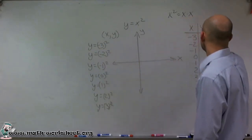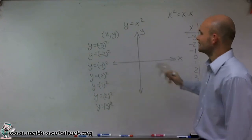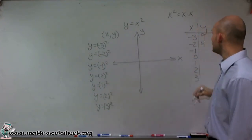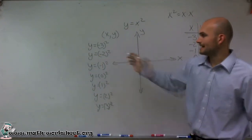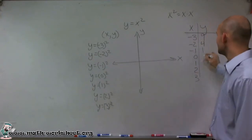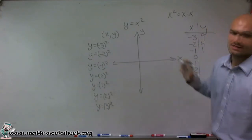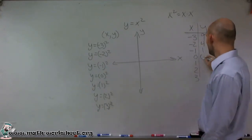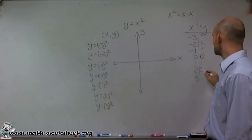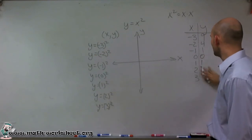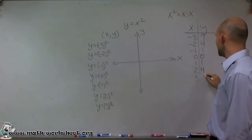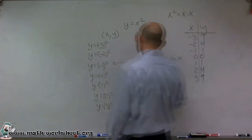Negative 2 times negative 2 is positive 4. Negative 1 times negative 1 is positive 1. Zero times anything is always 0. One times 1 is 1, then 4, and 9.